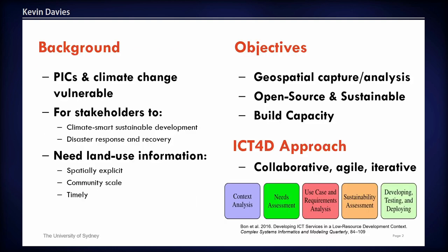Pacific Island countries are particularly vulnerable to climate change and they rely on their landscapes for ecosystem services, their livelihoods and economic activity. For stakeholders and landscape managers to engage in climate-smart sustainable development and disaster response and recovery, they need good spatially explicit information at a community scale that's timely.